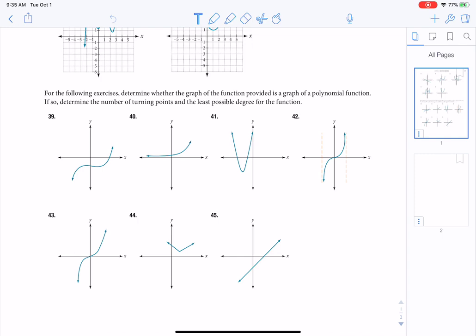The question says: determine whether the graph of the function provided is a polynomial function, and if so, determine the number of turning points and the least possible degree for that function. If I look at 39...